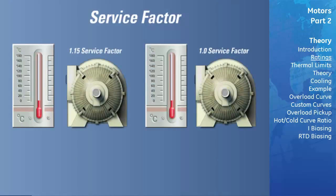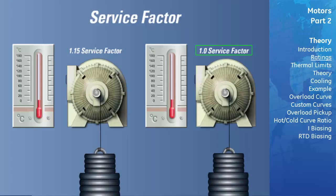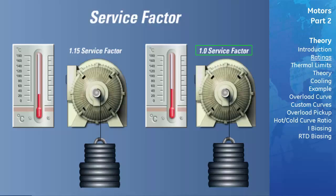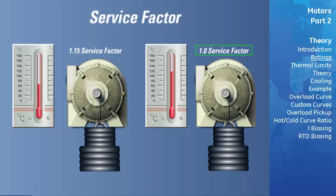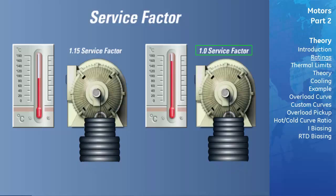Service Factor. For a given insulation, a motor with a 1.15 service factor has a lower temperature rise than a motor with a service factor of 1.0. This allows the motor to operate close to the service factor without exceeding rated temperature limits. When voltage and frequency are maintained at nameplate values, the motor may be overloaded up to the horsepower obtained by multiplying nameplate horsepower by the service factor. At a service factor load greater than 1.0, the motor's efficiency, power factor, and speed will differ from the nameplate, but the locked rotor current and breakdown torque will remain the same.